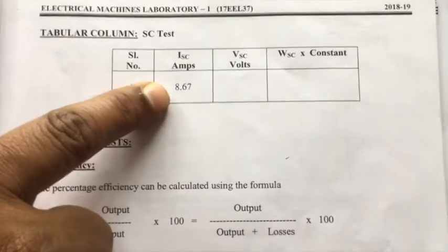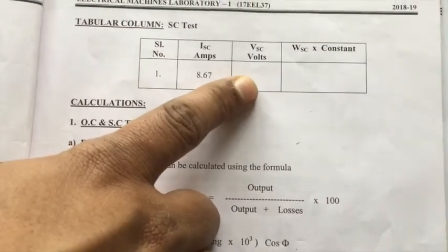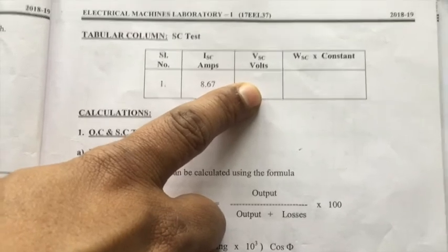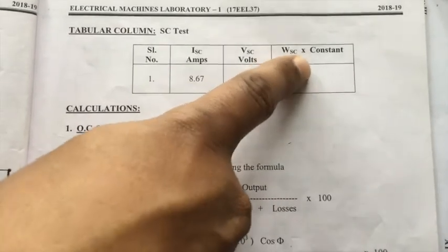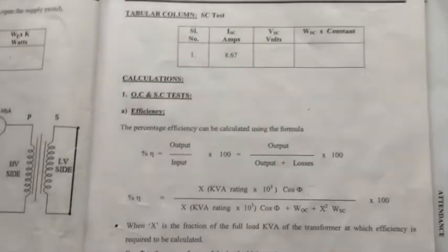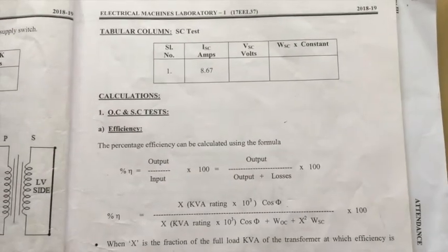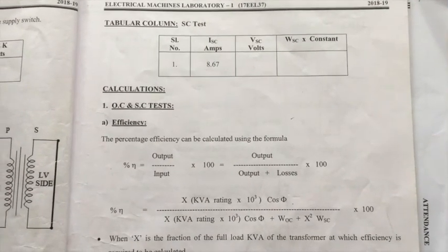The readings are: current 8.67 amps, voltage around 13 volts, and W_SC = 90 × K. This is how the OC and SC test experiment is conducted. Thank you.